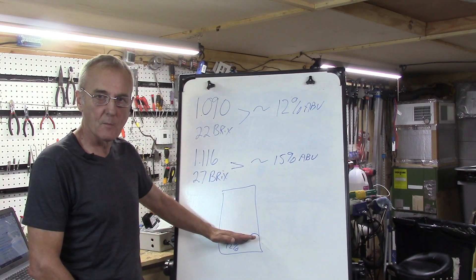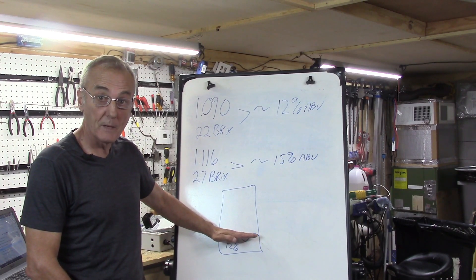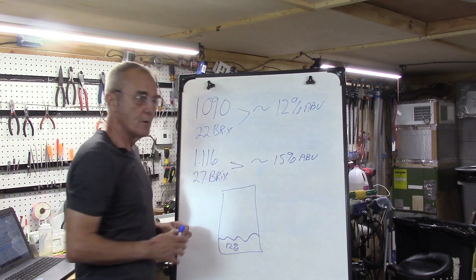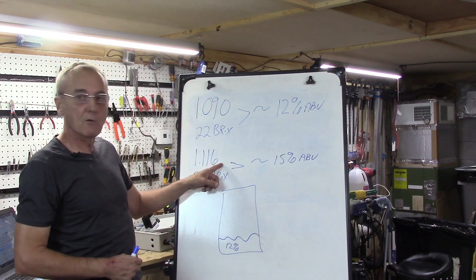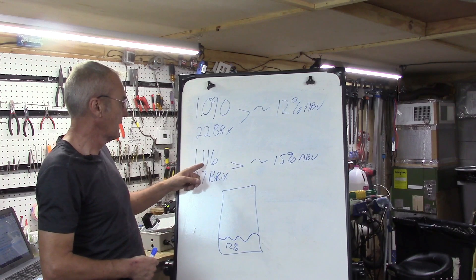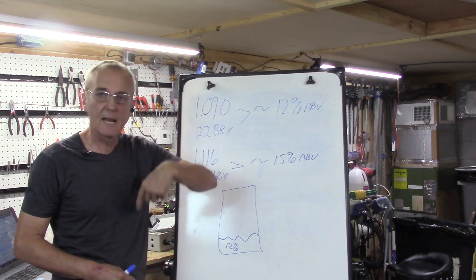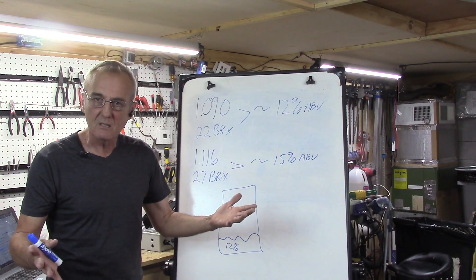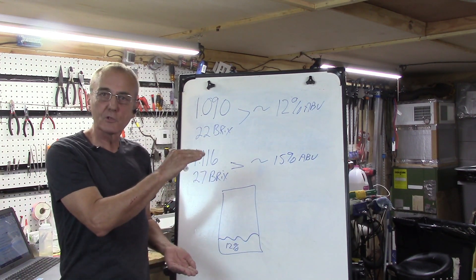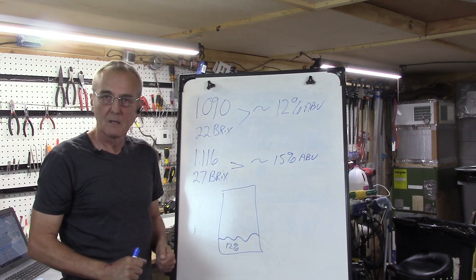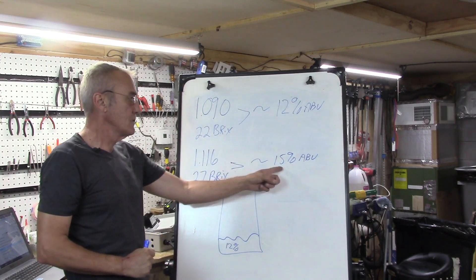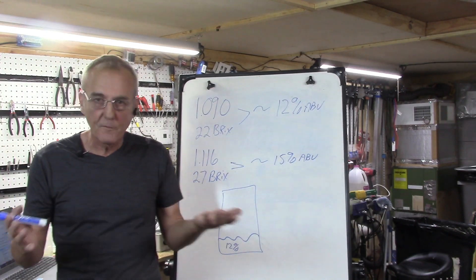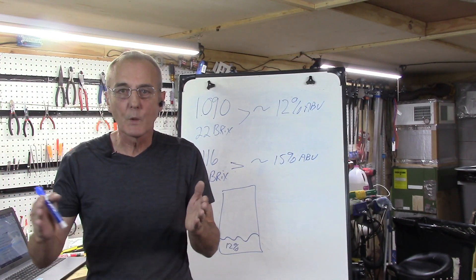Follow me: if we were using, if my gravity started at 1.116, I'd have 15% in here instead of 12. So that kind of makes sense, more fermentable sugars, more ethyl alcohol. Now remember also if you have an increased gravity, your fermentation time is going to increase a little bit as well.